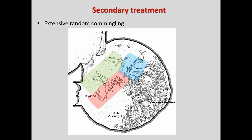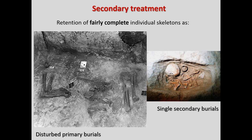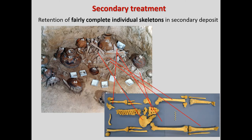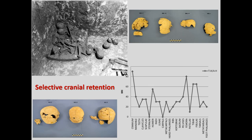The secondary treatment inside the grave usually shows extensive and random commingling of skeletons. Sometimes, however, we could clearly detect the intention to keep an individual together — in some primary burials where only part of the skeleton was left in situ, in what I call 'single secondary deposits' where only one skeleton comprised the secondary assemblage, and also when several bones of the same individual were placed together rather than widely mixed up. Another different choice was the selective retention of prominent bones, usually cranium, mandibles, and long bones — sometimes with special attention to their placement in clustered or ordered arrangements.